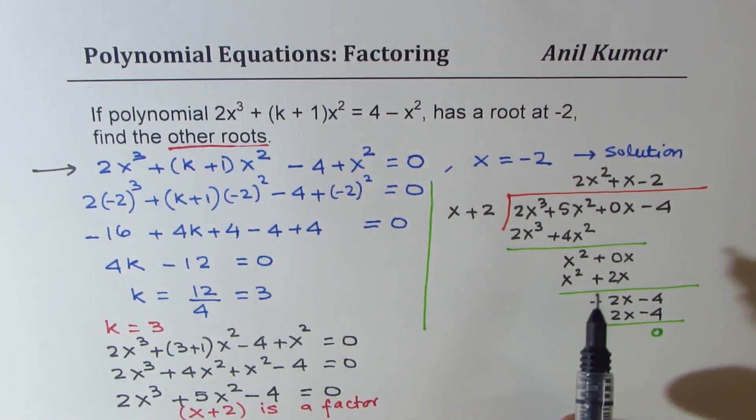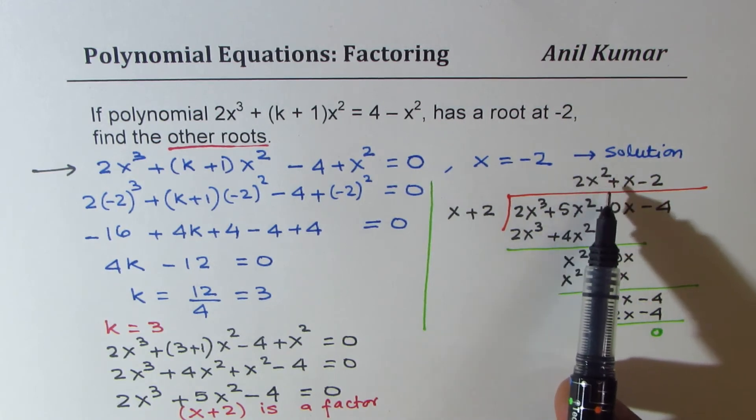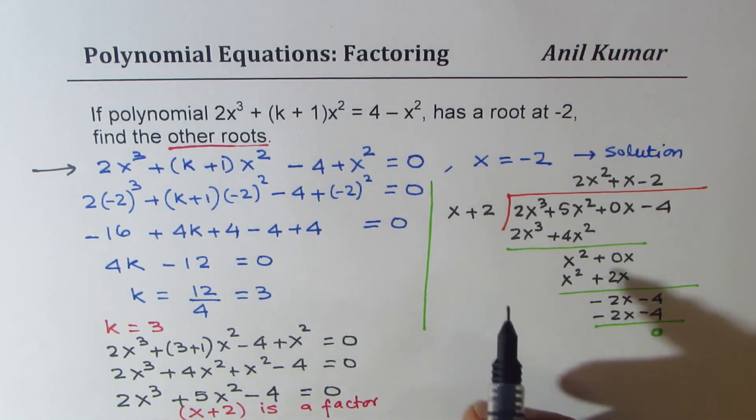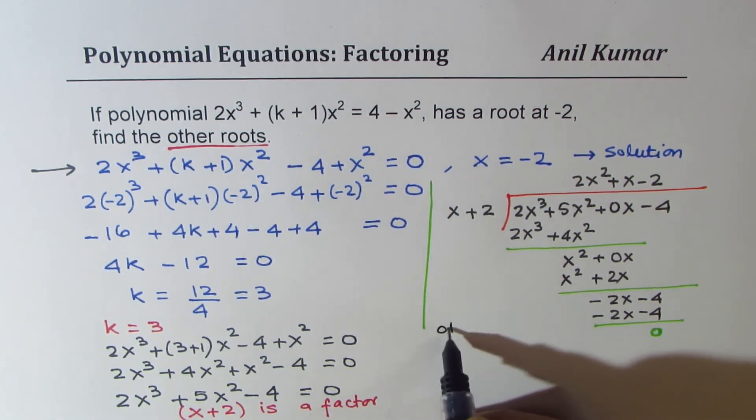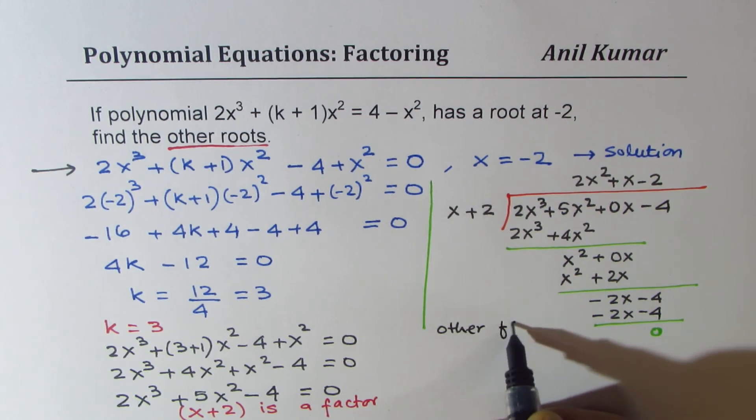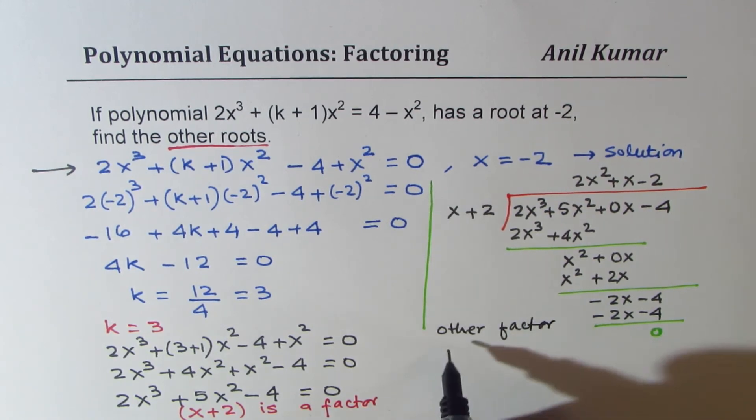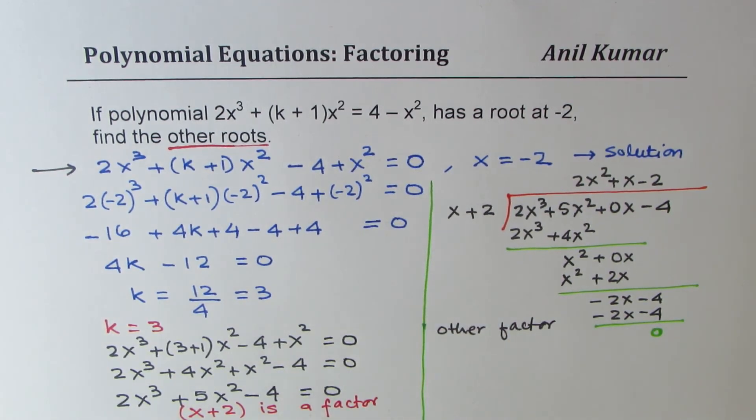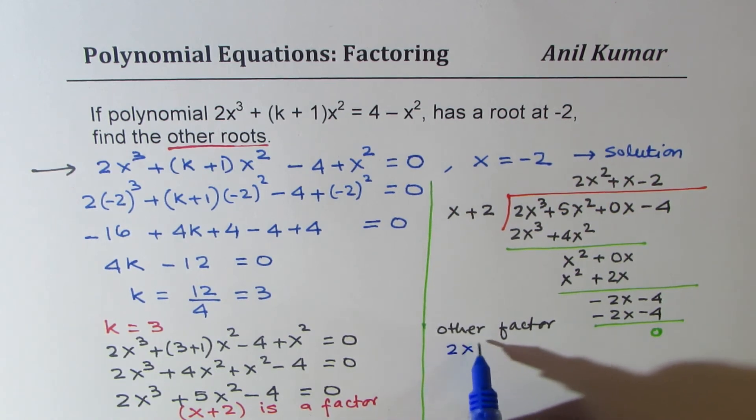So we know the other factor is 2x² + x - 2. So the other factor is this. So now we know that the other factor is the quotient, which is 2x² + x - 2.